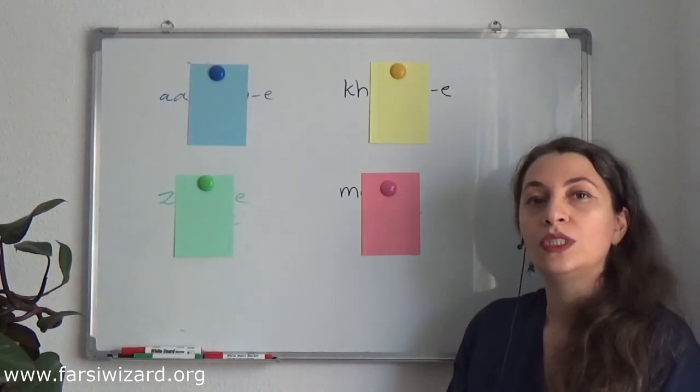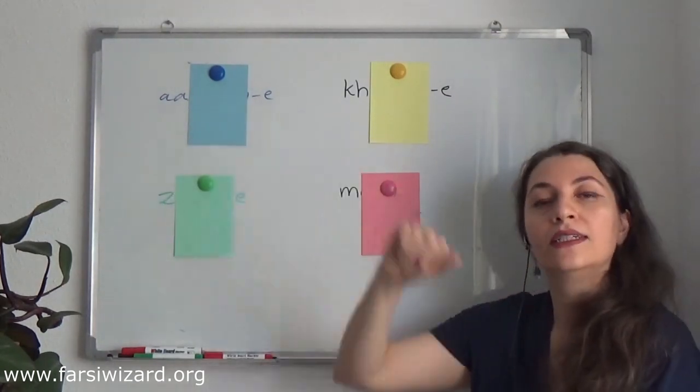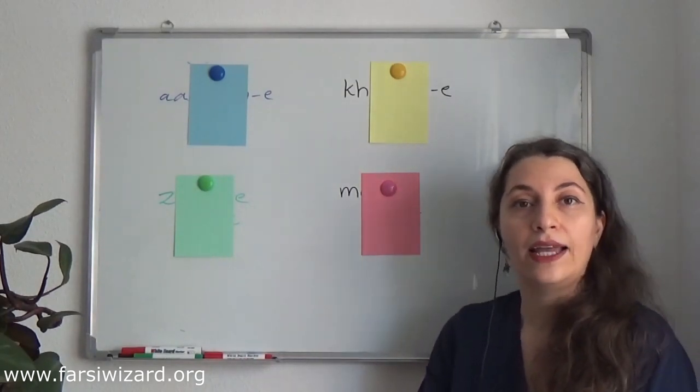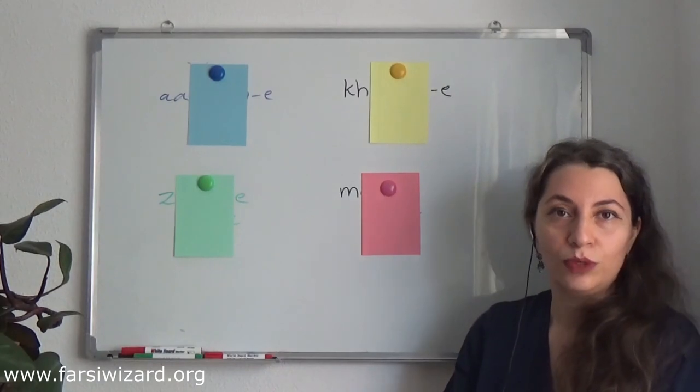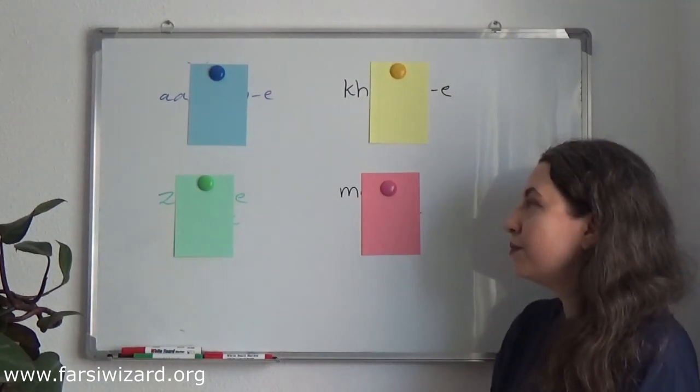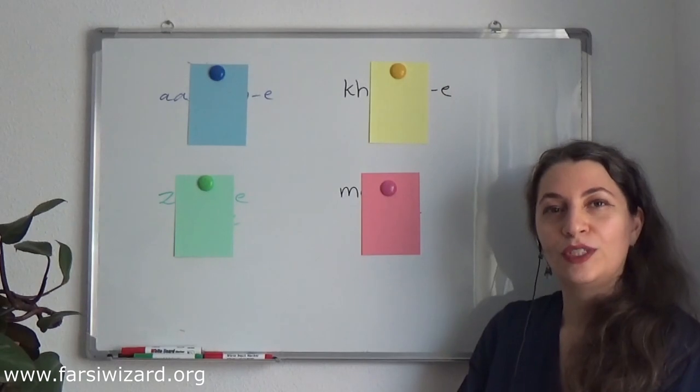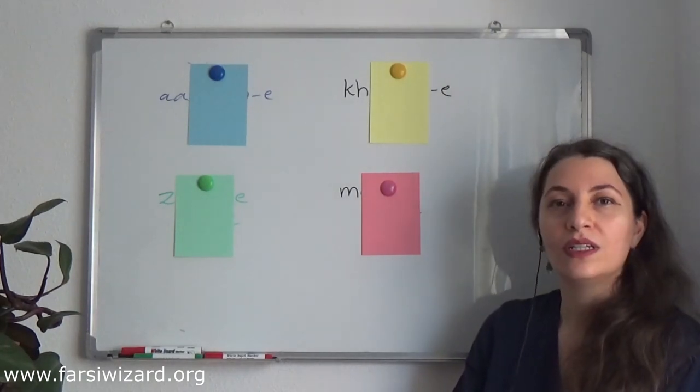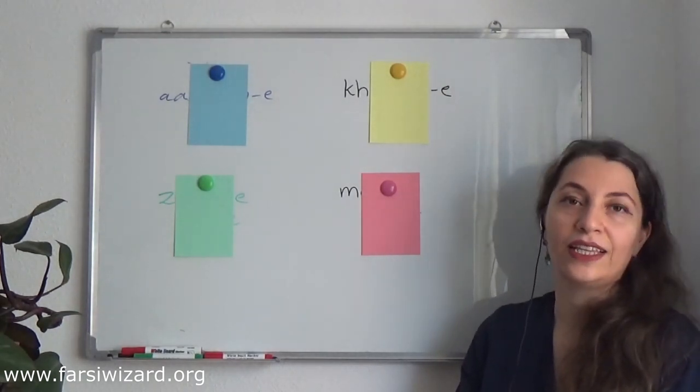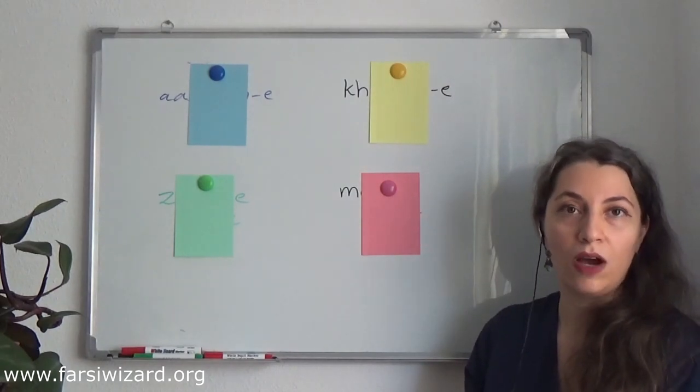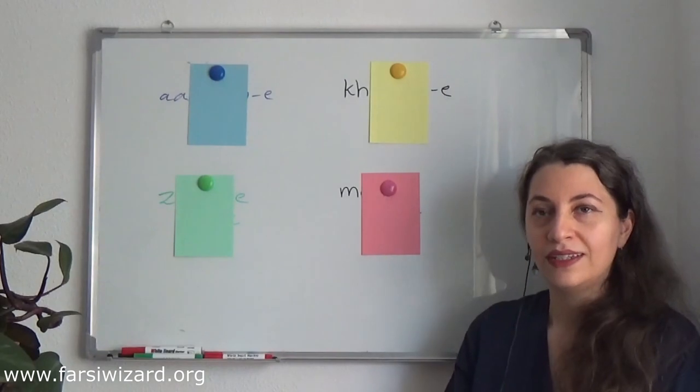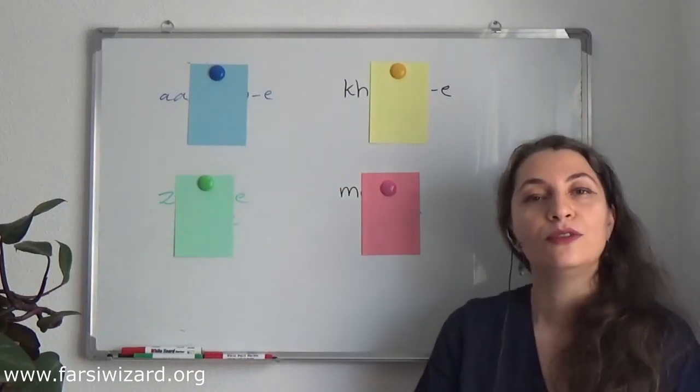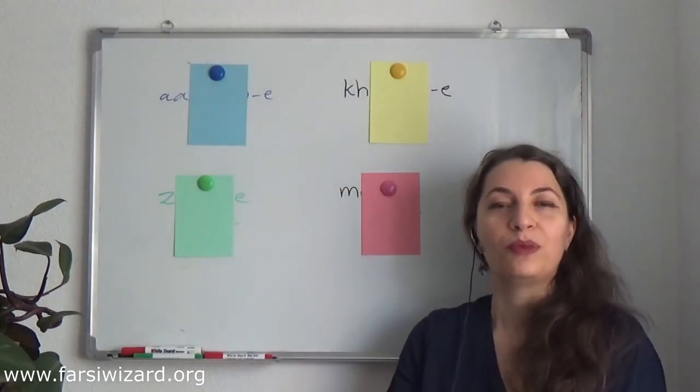How do we say blue sky? Think about this. You already know that sky is āsmān. Now try to add the adjective blue, blue sky. You remember that the color blue was ābi, like the color of water. Water, āb, blue, ābi. So blue is ābi, sky is āsmān. How do we say blue sky?